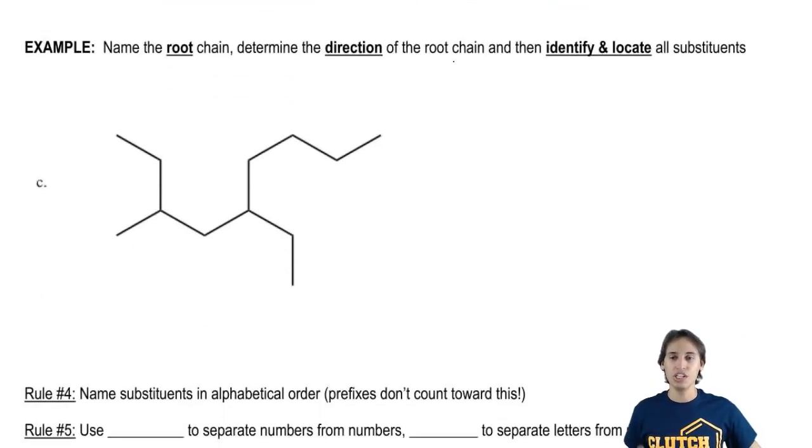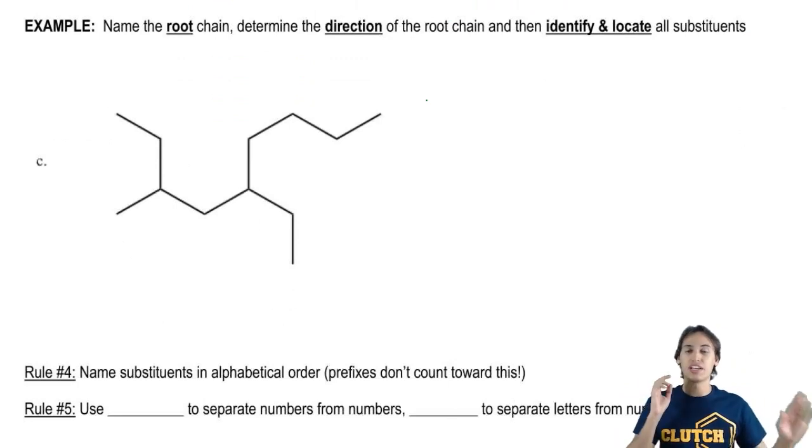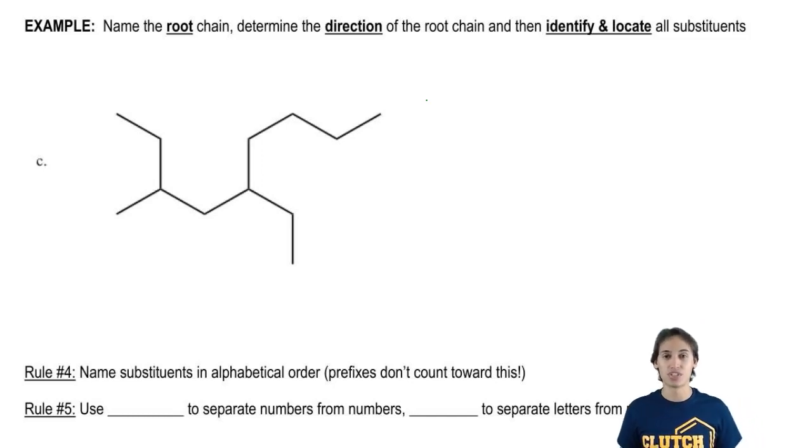So what I want you guys to do is we're going to put this all together. We're not going to name the entire thing yet, but we're pretty much going to get all the pieces. I want you guys to name the root chain, determine the direction of the root chain, and then identify and locate all the substituents.